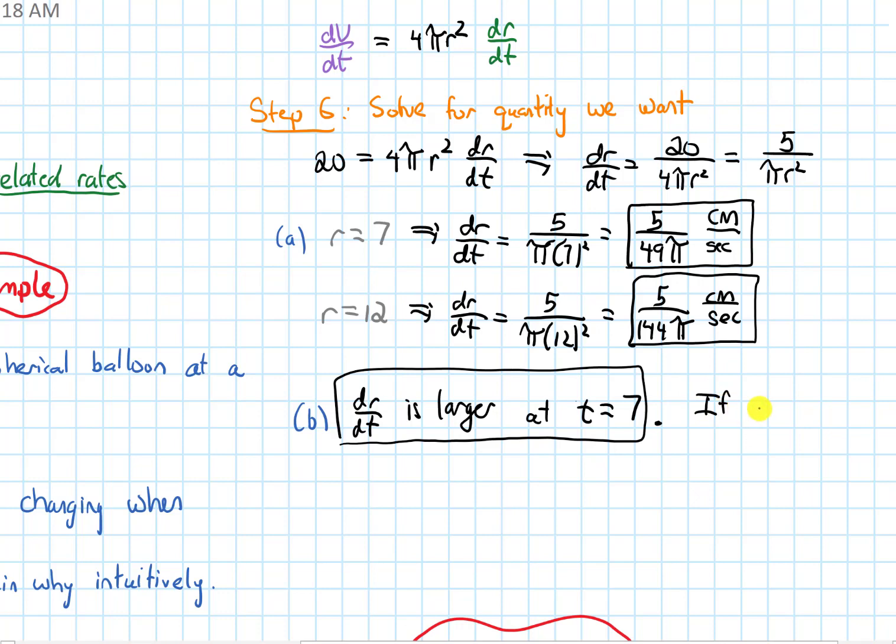As the volume gets larger, it has less impact on the radius. If you think back to maybe when you've inflated a balloon before or seen other people do it, initially when you start inflating the balloon, the radius gets bigger quite fast. But the bigger and bigger that the balloon is, the less of an impact that has on the radius.